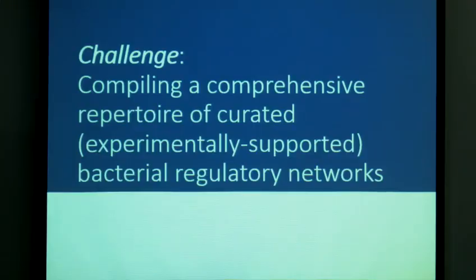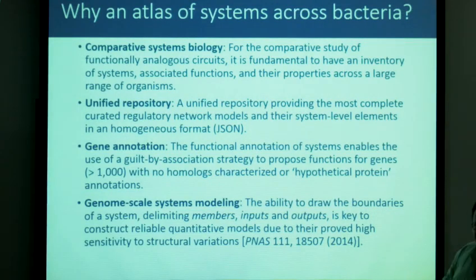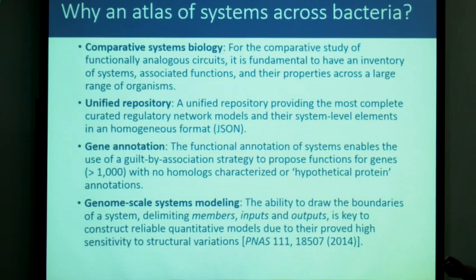The next challenge is to compile a comprehensive repertoire of curated regulatory networks, and we developed AVASI. For comparative systems biology, we need an inventory of systems to compare. AVASI provides a unified repository offering curated regulatory networks in a homogeneous format using JavaScript Object Notation. This also enables annotation of genes without characterized homologs, using a guilt-by-association strategy to assign function.